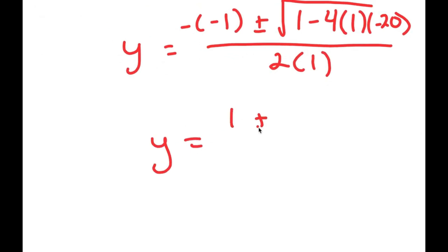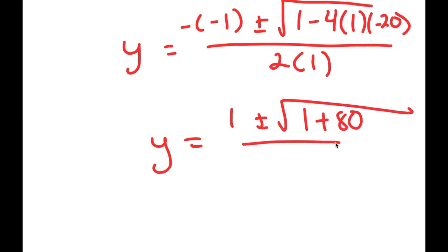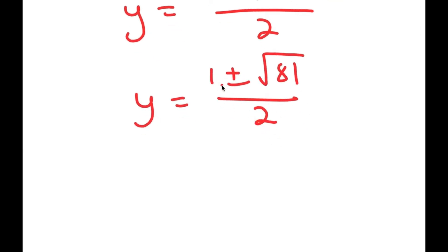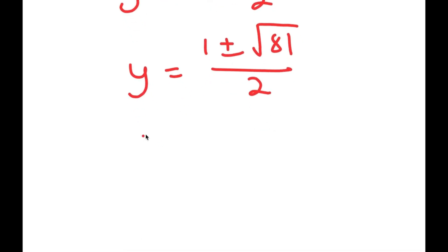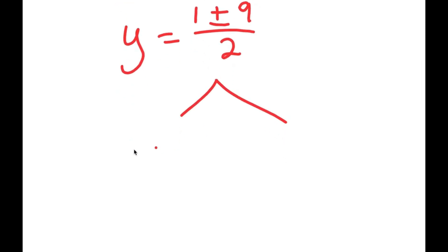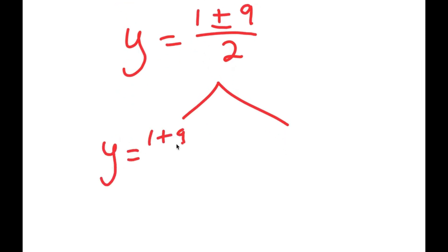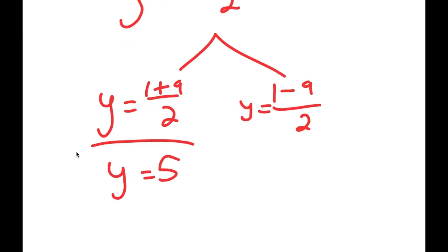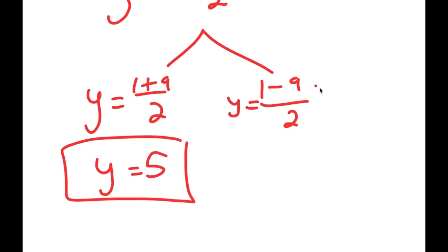This equals 1 plus or minus the square root of 1 plus 80 over 2, which is 1 plus or minus the square root of 81 over 2. The square root of 81 is 9, so y equals 1 plus or minus 9 over 2. This gives two solutions: y equals 1 plus 9 over 2, which is 10 over 2 equals 5, and y equals 1 minus 9 over 2, which is negative 8 over 2 equals negative 4.